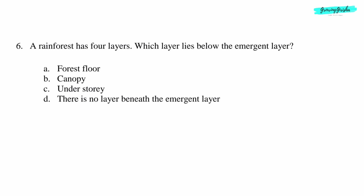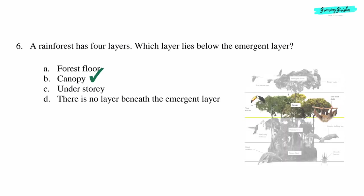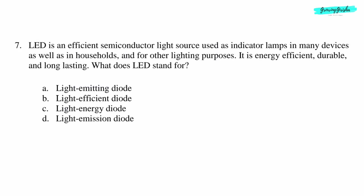Question 6: A rainforest has four layers. Which layer lies below the emergent layer? Option B: Canopy.